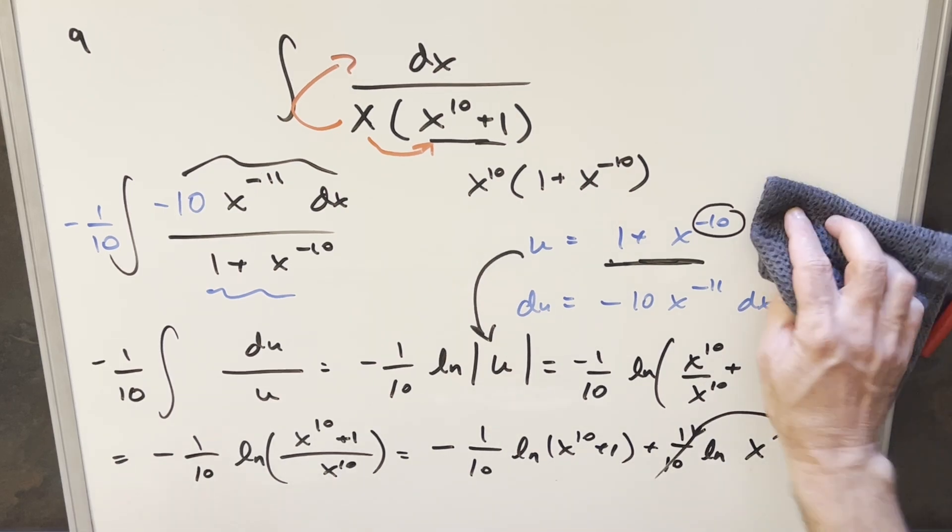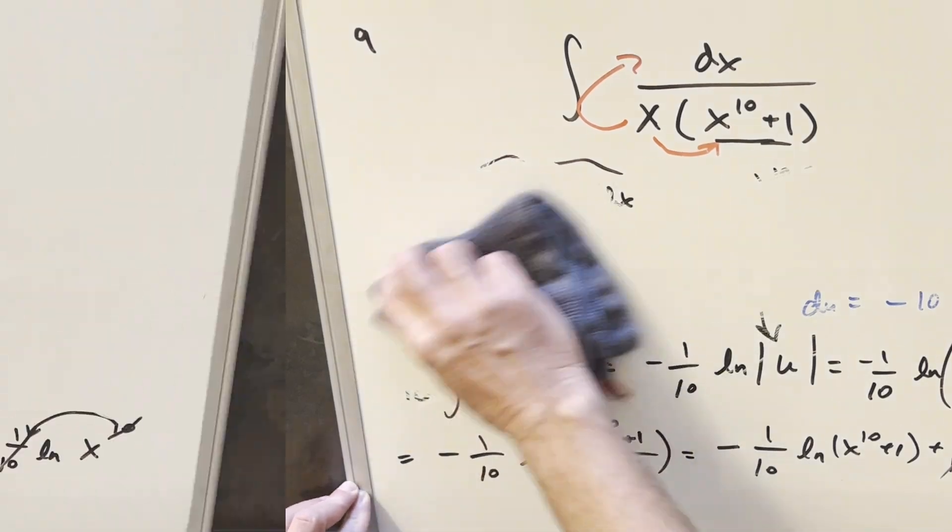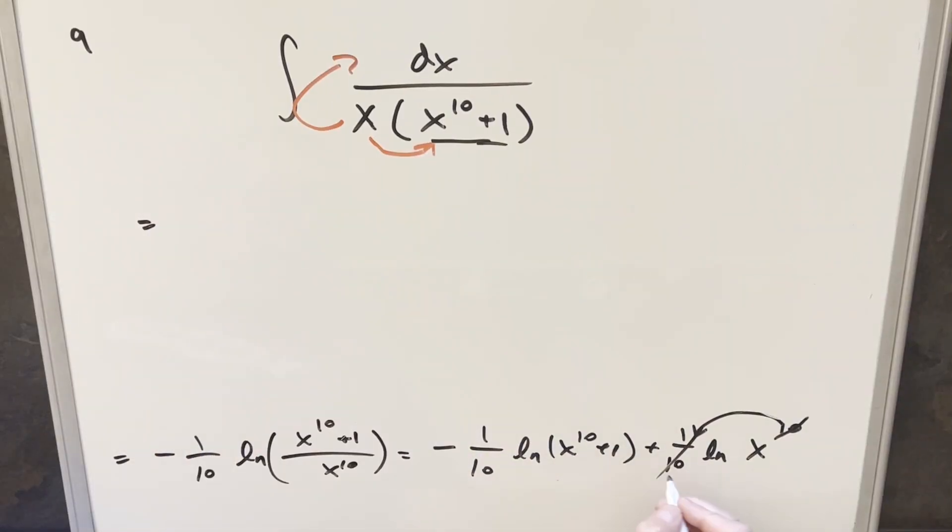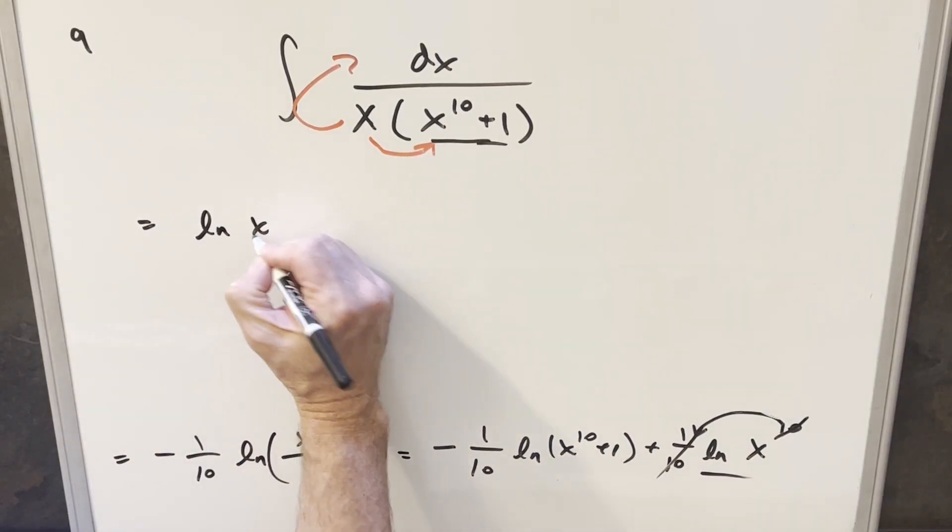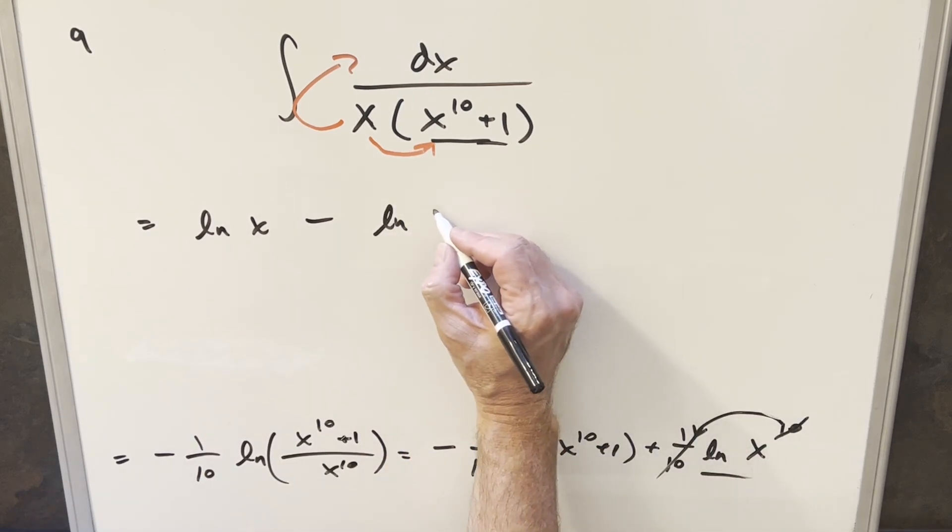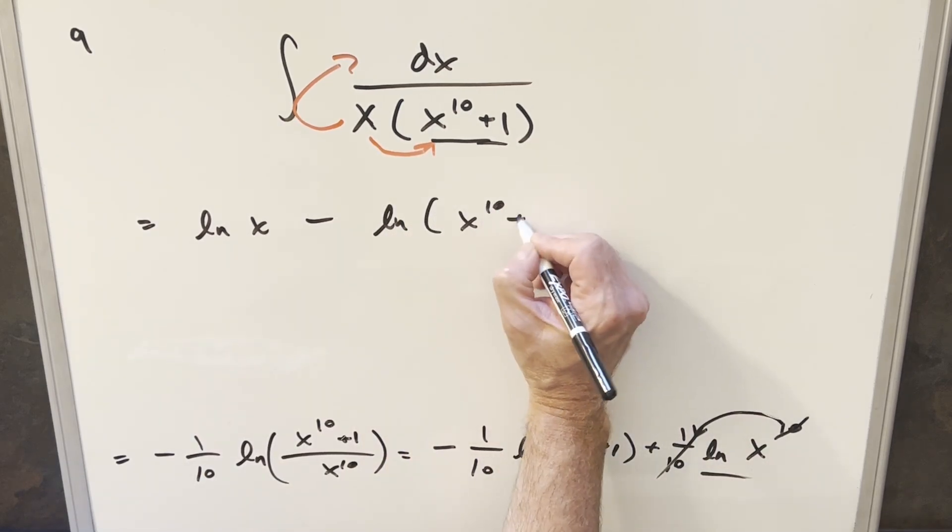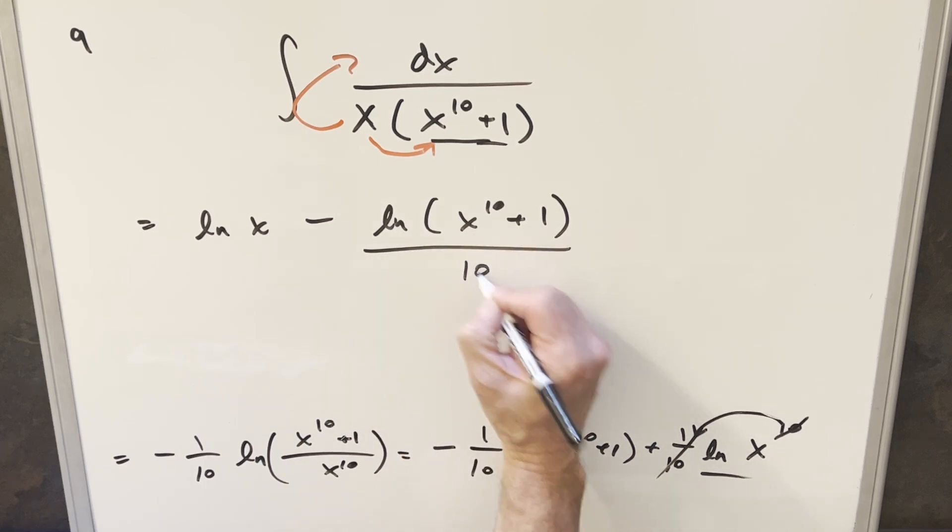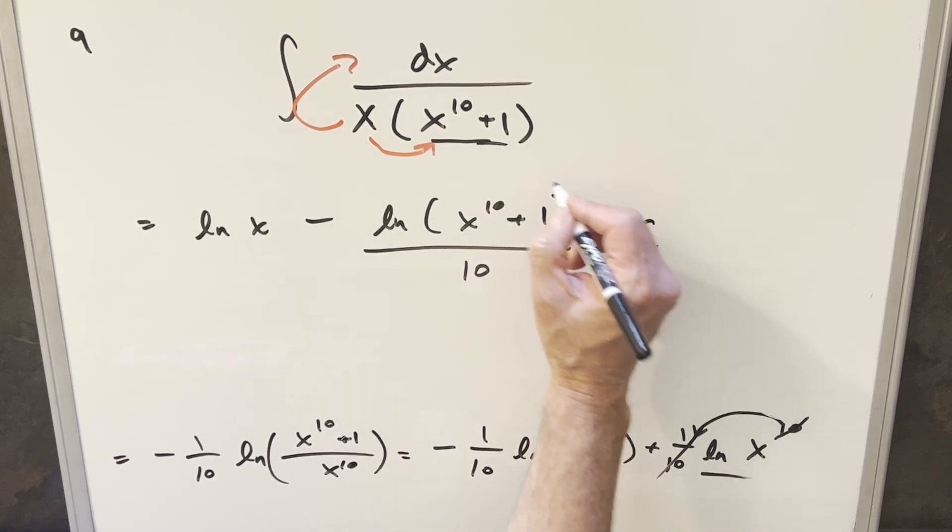And so let me just make some space for a final solution here. So cleaning this up, we'll do this part first. We'll have just natural log x minus 1 over 10. Here, I'll write the whole thing over 10. So I'll write it as natural log x to the 10 plus 1 over 10. Add a plus c on there, and that's it.